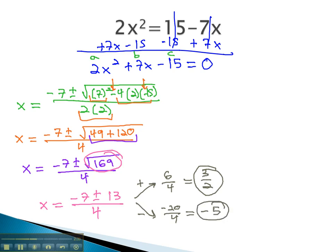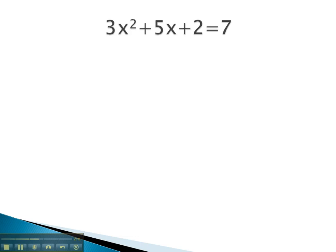Let's take a look at one more example, where we have to make the equation equal to 0 first, before we can solve using the quadratic formula. In this problem, it equals 7. We need to move the 7 over by subtracting 7 from both sides, lining up like terms to get 3x squared plus 5x minus 5 equals 0.